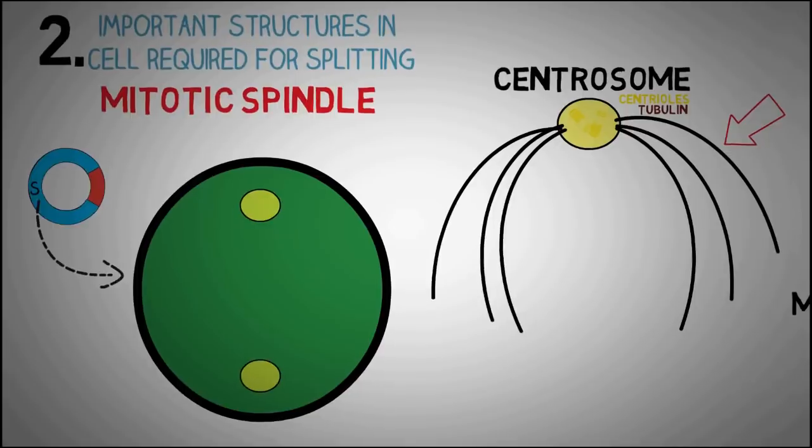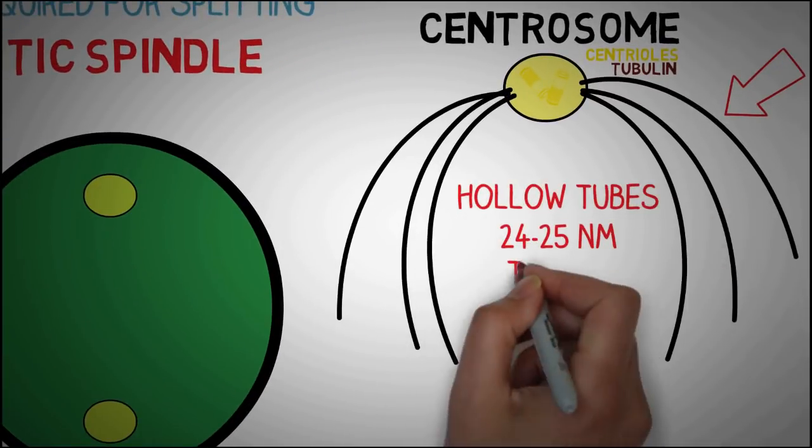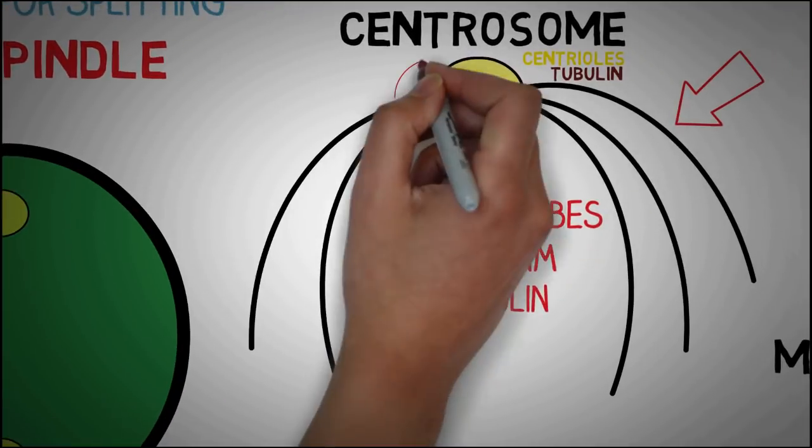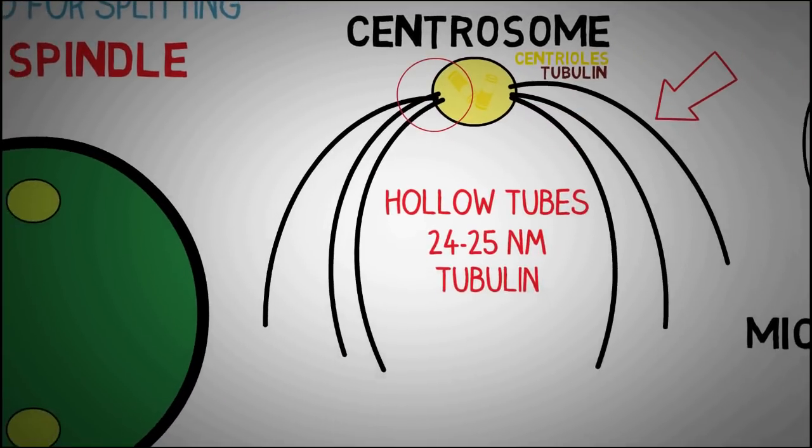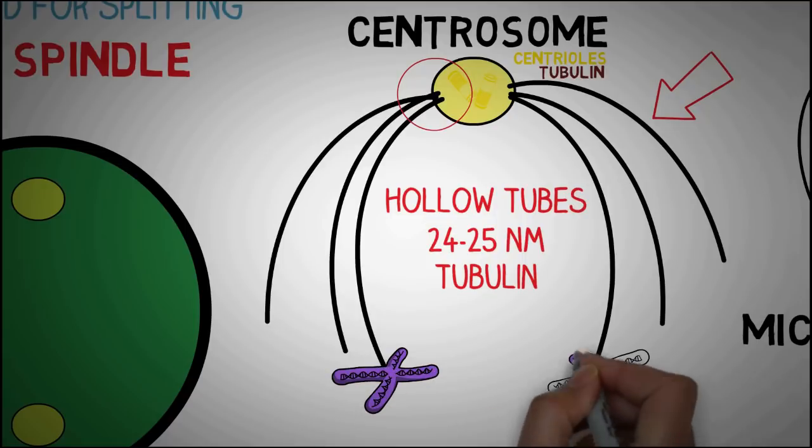Microtubules are hollow tubes 24 to 25 nanometers in diameter and they are also composed mainly of the protein tubulin. They are attached to a centrosome on one side and on the other side the microtubules attach to the centromere of the chromosome which we discussed earlier.